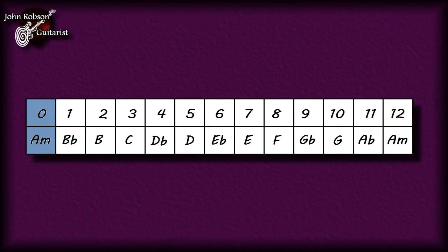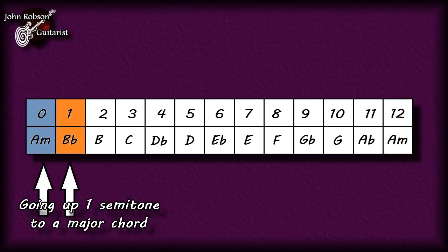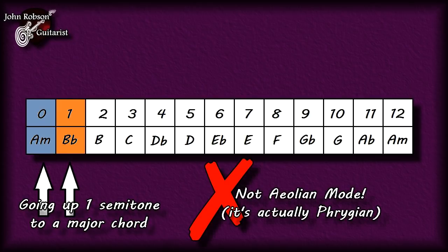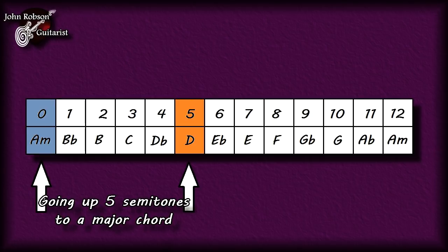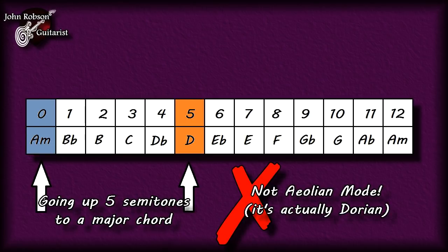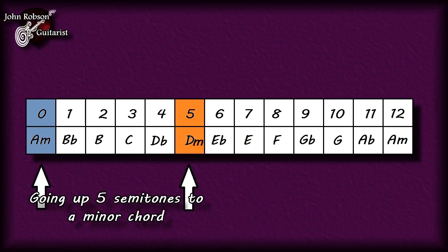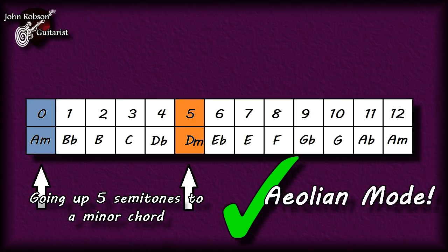Let's take a look at the relationships between any of the chords that may be in your chord sequence and the home chord, which in this case is A minor. If within that chord sequence you have a major chord one semitone above your home A minor chord — in this case that's going to be B flat — this is not the Aeolian mode. If you have a major chord five semitones above your home minor chord, then this is not the Aeolian mode — it's actually Dorian. If, however, you have a minor chord five semitones above your home minor chord, then this is the Aeolian mode, providing you don't have any of the other chords we've already mentioned.